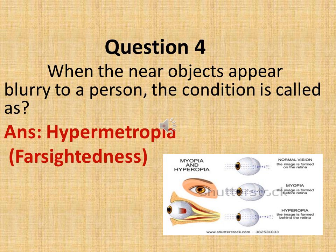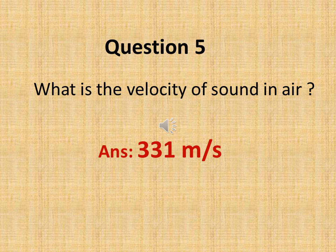The next question is: when near objects appear blurry to a person, the condition is called hypermetropia or farsightedness. In this condition the length of the eyeball becomes shorter, so the image on the retina is formed behind the eyeball. Convex lenses are used for the treatment of hypermetropia.